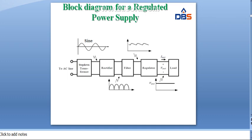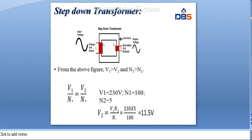Now we will see what a step-down transformer is. It has a primary coil and a secondary coil. The input voltage is a pure sinusoidal signal applied to the primary coil. In a step-down transformer, the input voltage decreases. That depends on the number of turns. From this figure, V1 is greater than V2, and N1 is greater than N2.